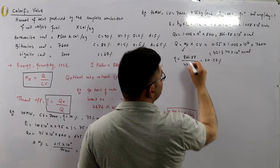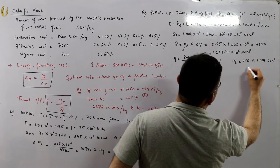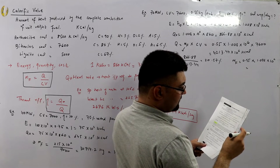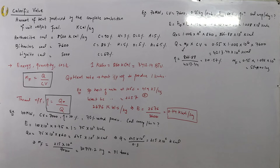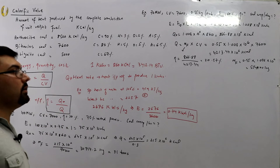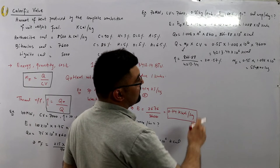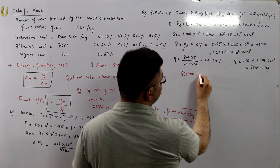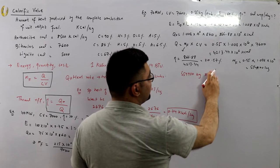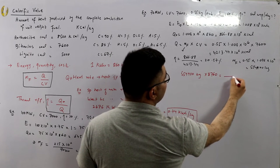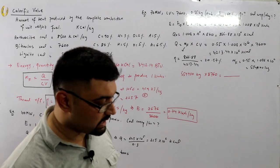Coal consumption per day: mass of fuel = 0.55 × 1.008×10⁶ = 554,400 kg. Multiply by 24 for daily consumption, or by 8760 for annual consumption. Multiplying by cost gives the total money spent.